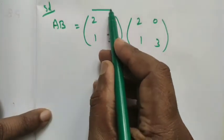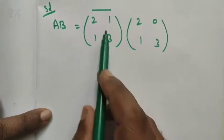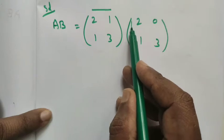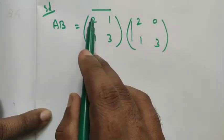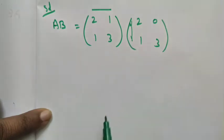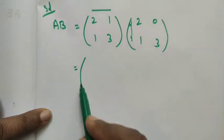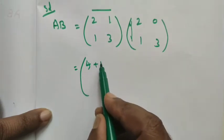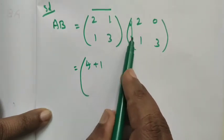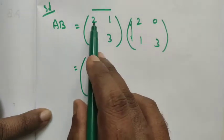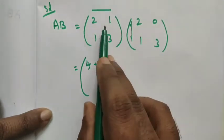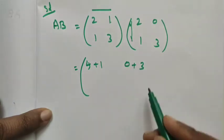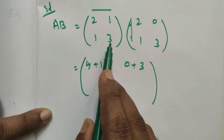To multiply A by B, take the horizontal row elements and multiply with the vertical column elements. For the first row, first column: 2×2 = 4 and 1×1 = 1, giving 4 + 1 = 5. For the first row, second column: 2×0 = 0 plus 1×3 = 3, giving 3.